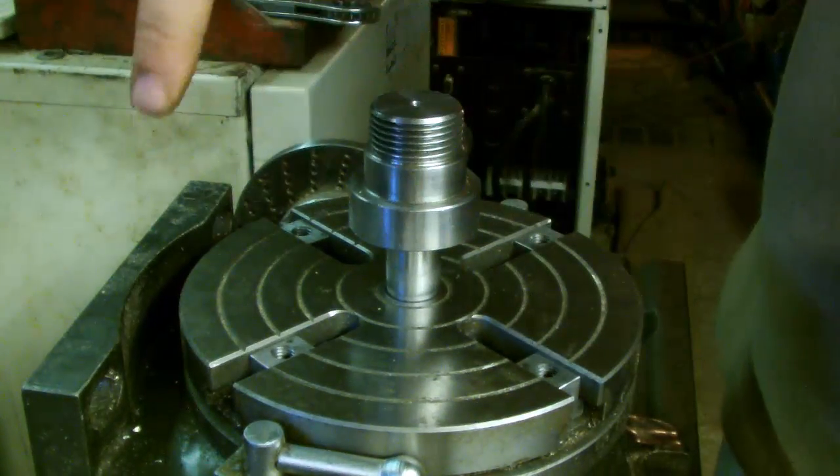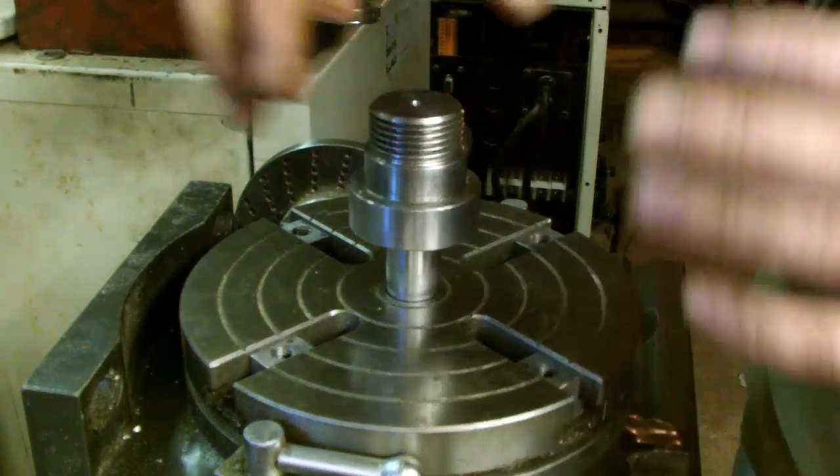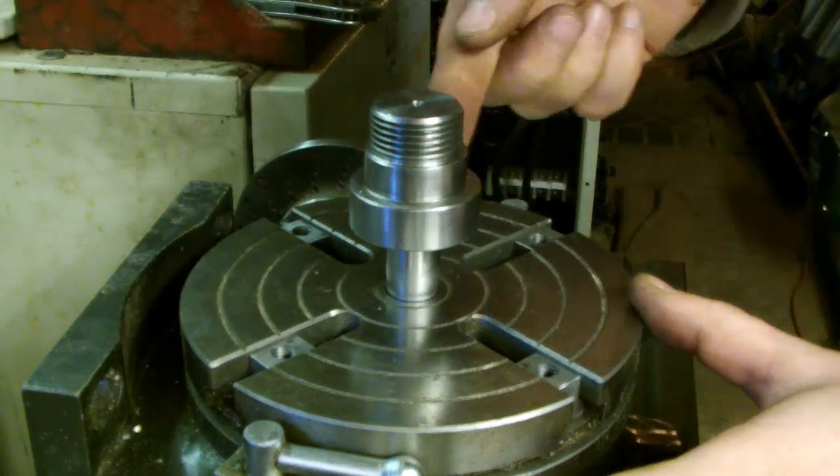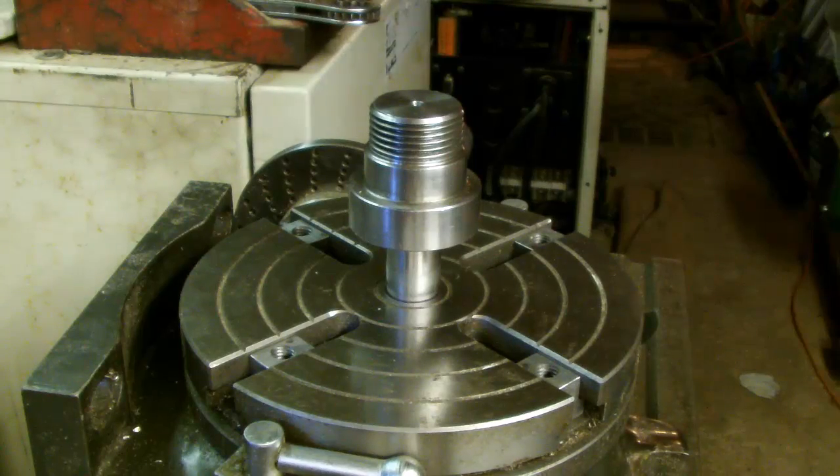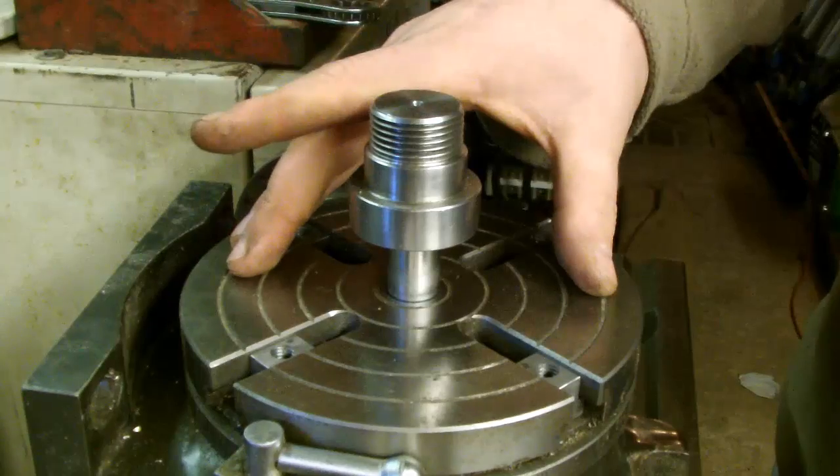And then rotating the milling head with the dial test indicator connected around this, on one of these edges, until we've got zero deflection. And then we know that we're perfectly in alignment with the center of the rotary table.